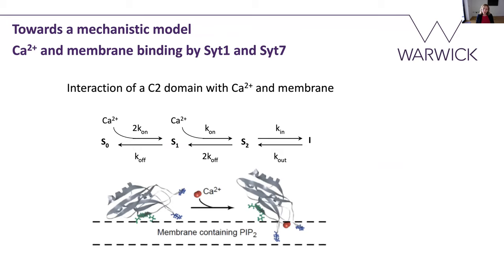We wanted to introduce a mechanistic model incorporating synaptotagmin and the fact that when calcium ions bind to synaptotagmin it can insert into the membrane. The initial scheme at the level of synaptotagmin is: synaptotagmin can bind up to two calcium ions, and when this takes place the synaptotagmin can enter into the membrane with some rate k_in. We have a number of parameters in this general scheme.